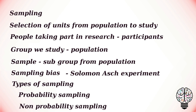The two types are probability sampling and non-probability sampling. Probability sampling involves random selection, allowing you to make statistical inferences about the whole group. It means that every member of the population has a chance of being selected. If you want to produce results that are representative of the whole population, you need to use a probability sampling technique. Non-probability sampling involves non-random selection based on convenience or other criteria, allowing you to easily collect initial data.